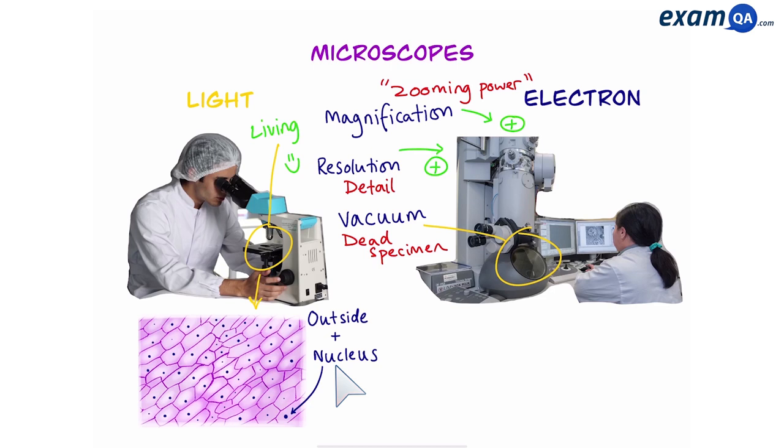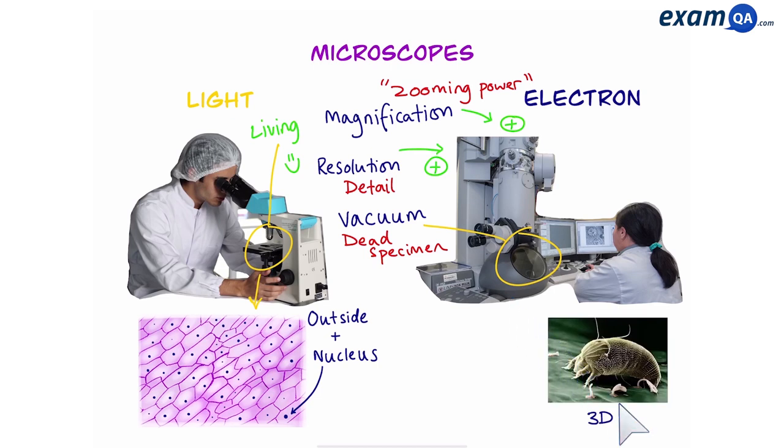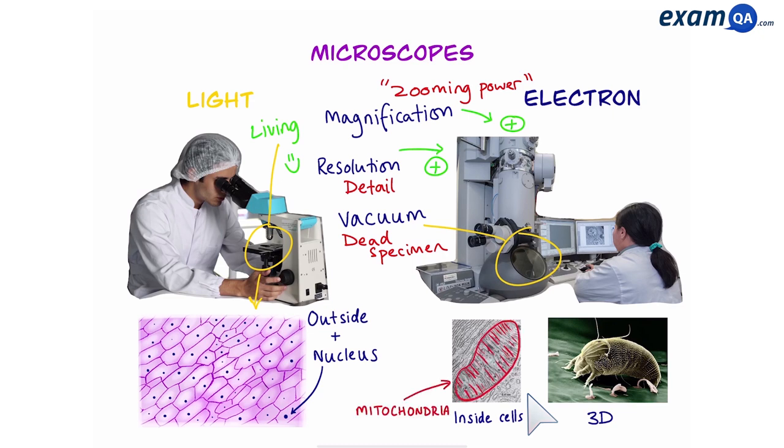If you want to see more detail, we have to use an electron microscope. With an electron microscope you can see objects in 3D and you can see inside cells. This is a mitochondrion. If you tried to use a light microscope, you probably wouldn't even see it.